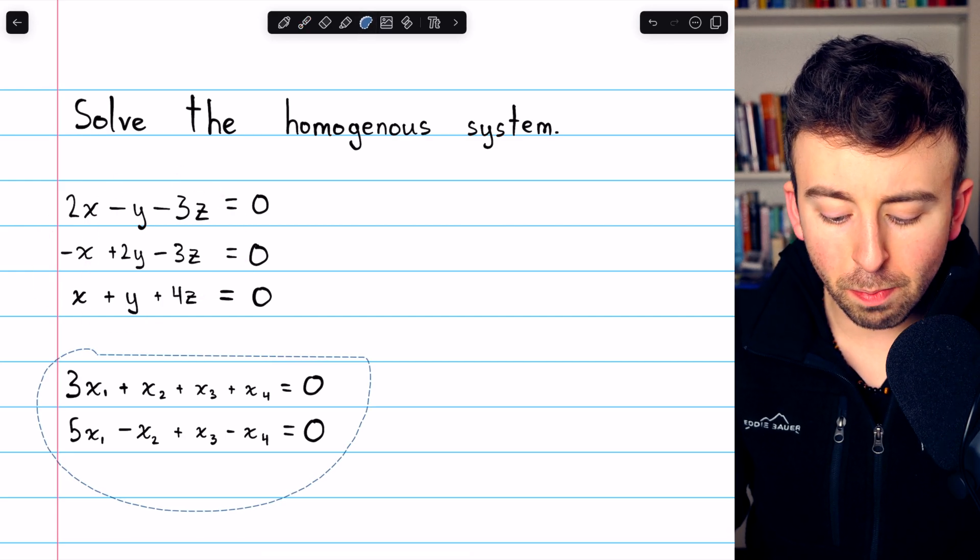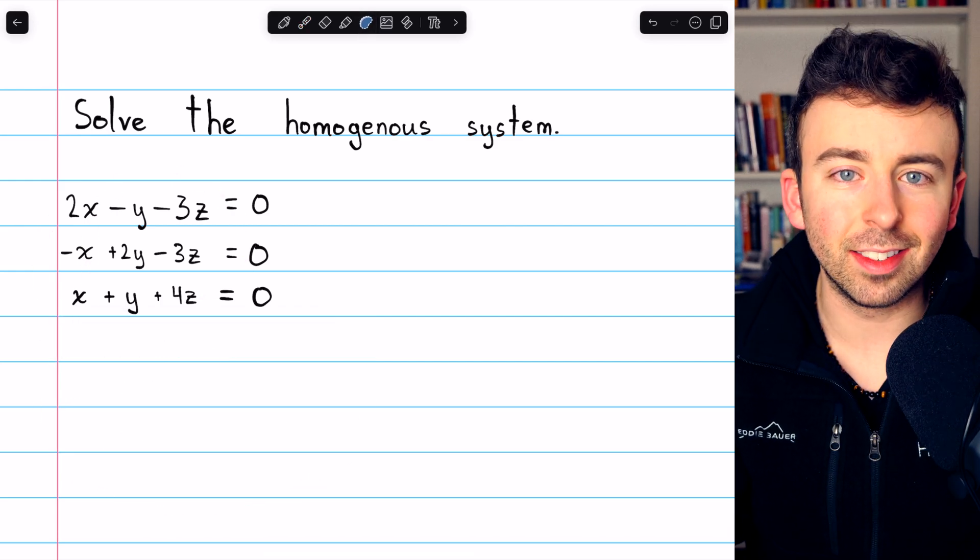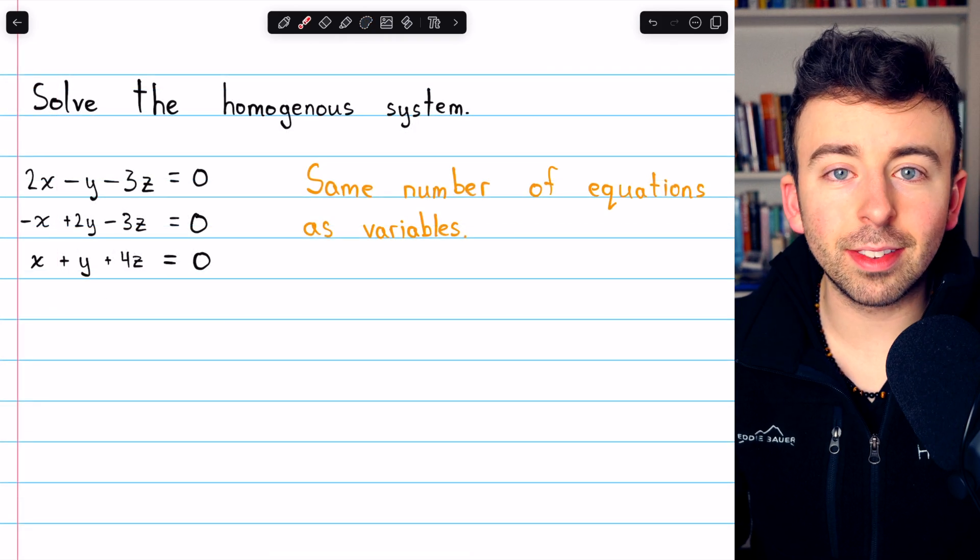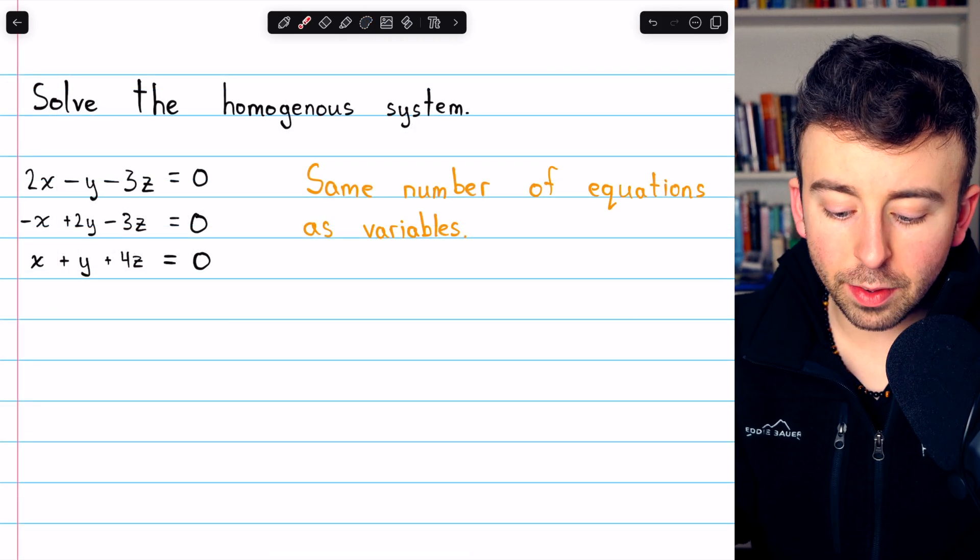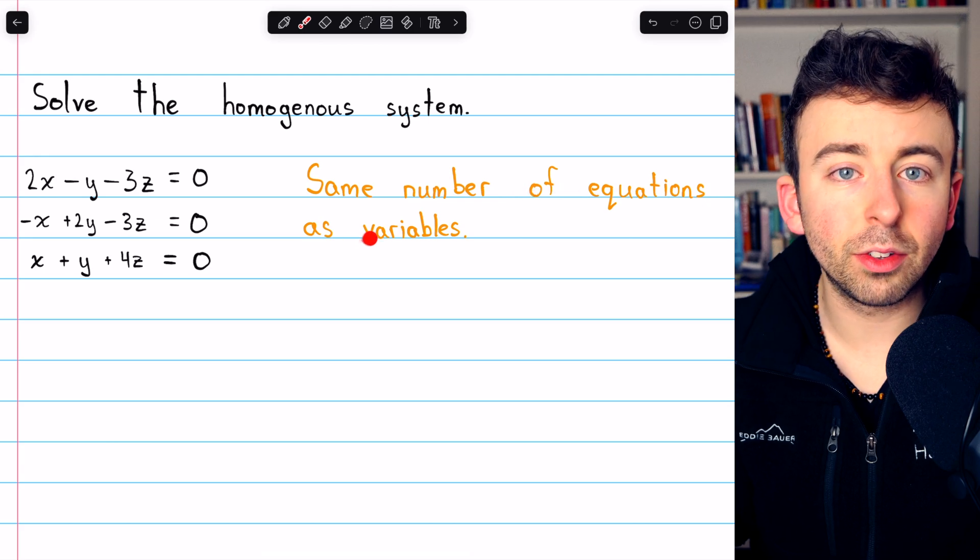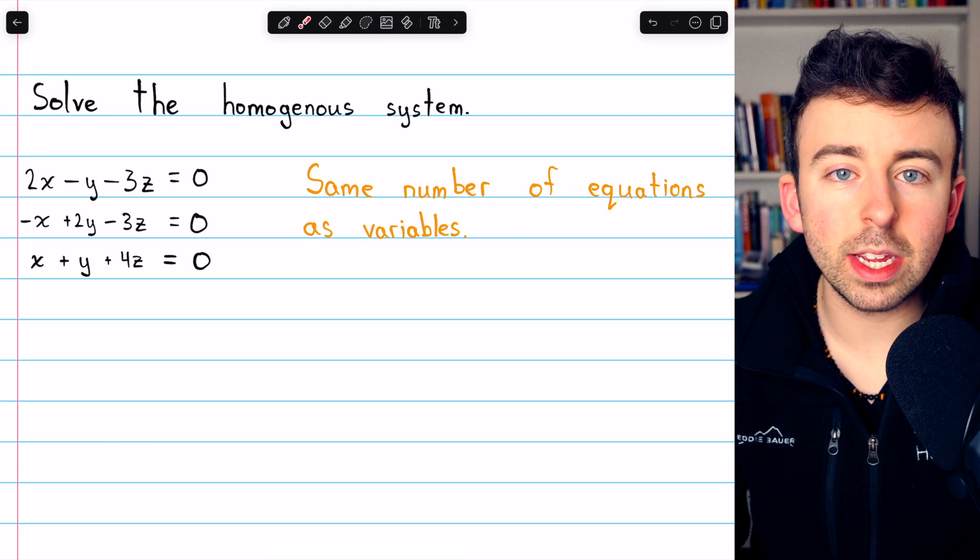As you'll see, these are two meaningfully different examples. You should immediately notice that in this system, we have the same number of equations as variables. We have three of each.